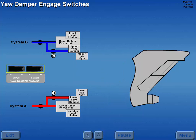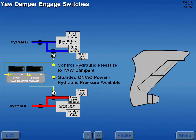The upper and lower yaw damper engage switches control hydraulic pressure to the yaw dampers. With the switches in the guarded on position and AC power available, the respective yaw damper shutoff valves are open and hydraulic pressure is supplied to the yaw dampers.